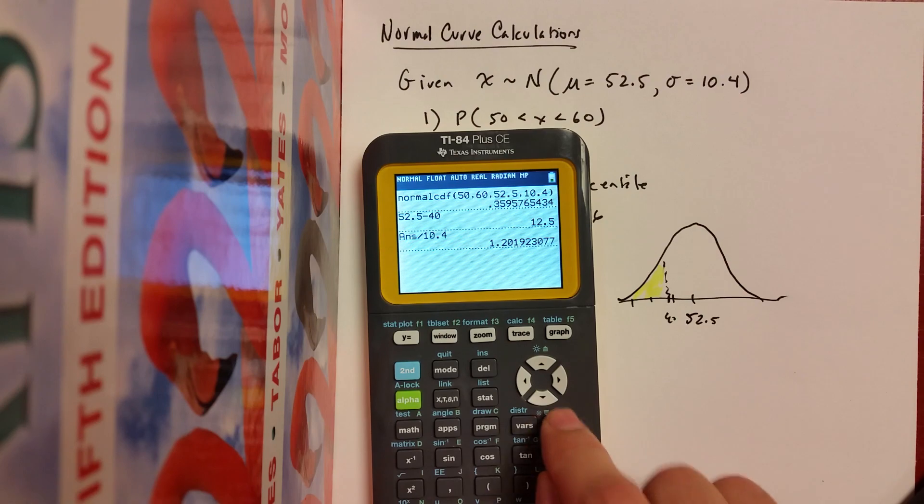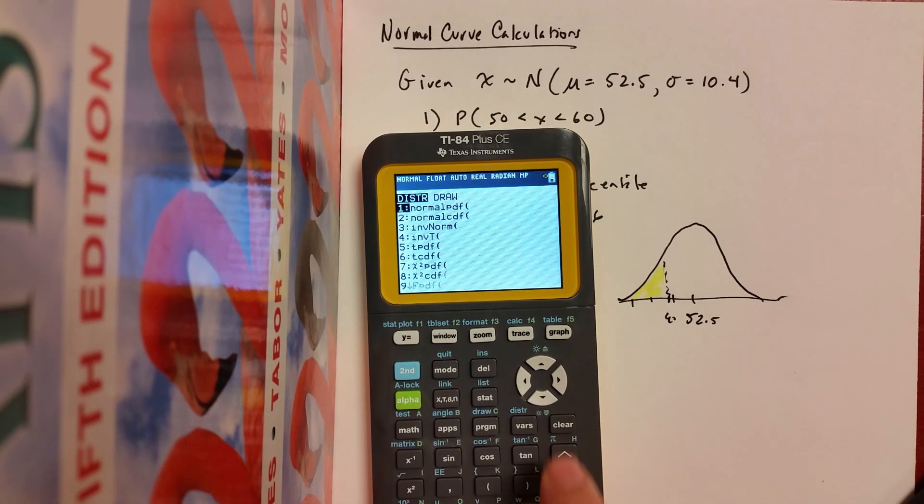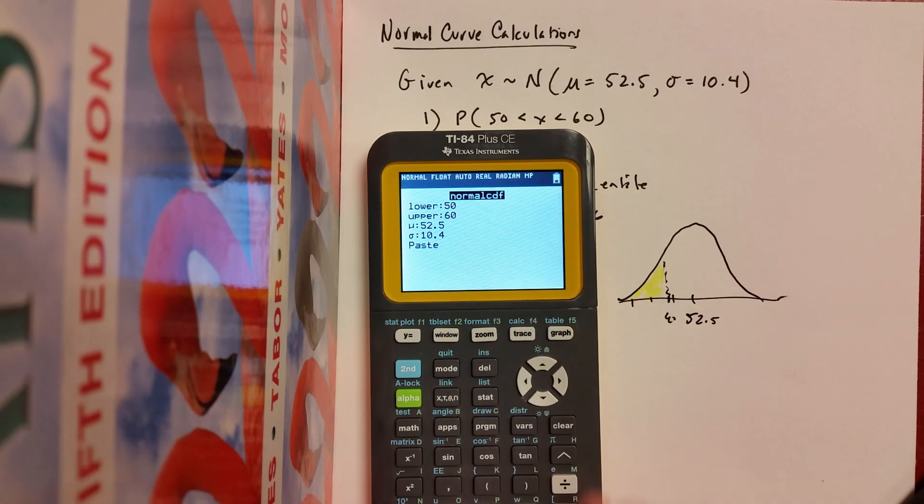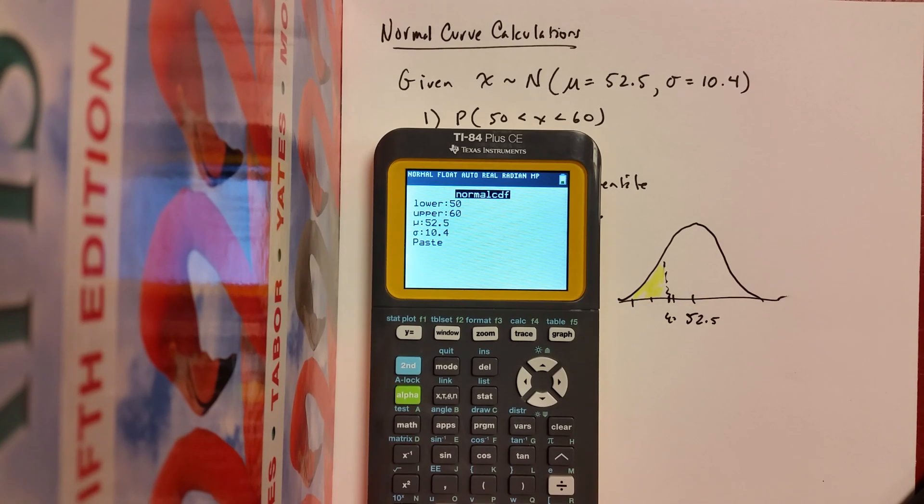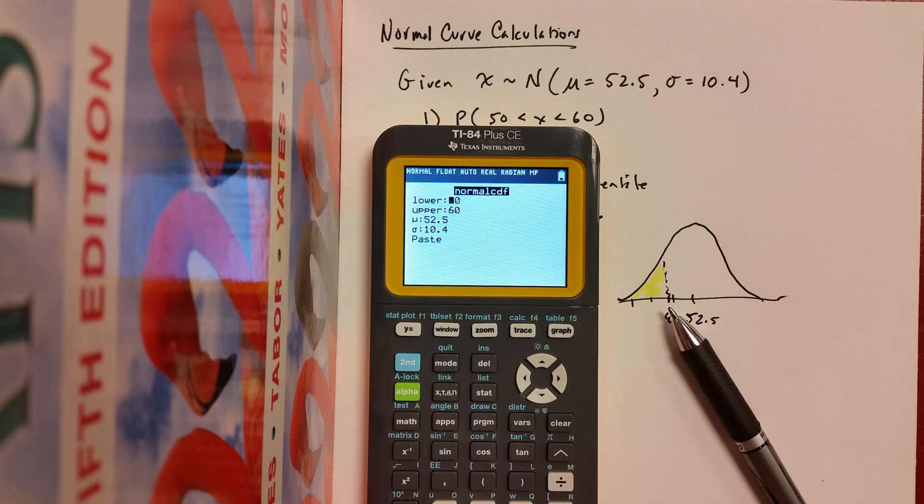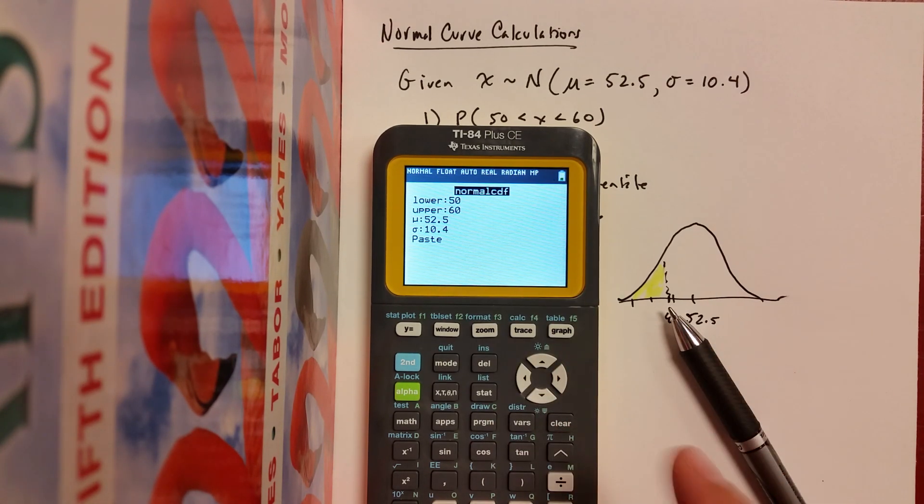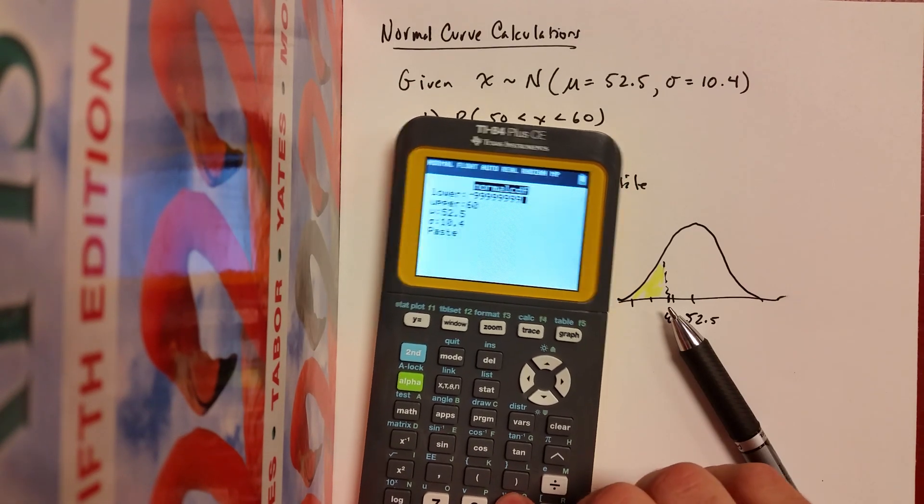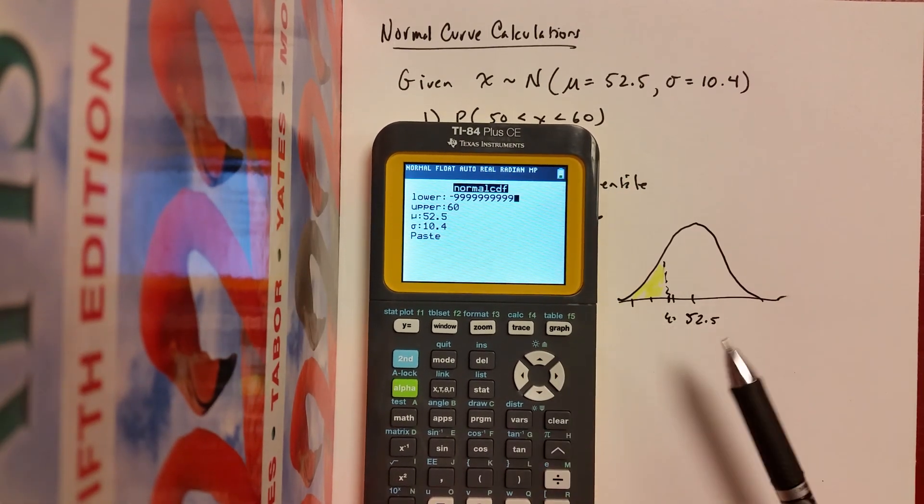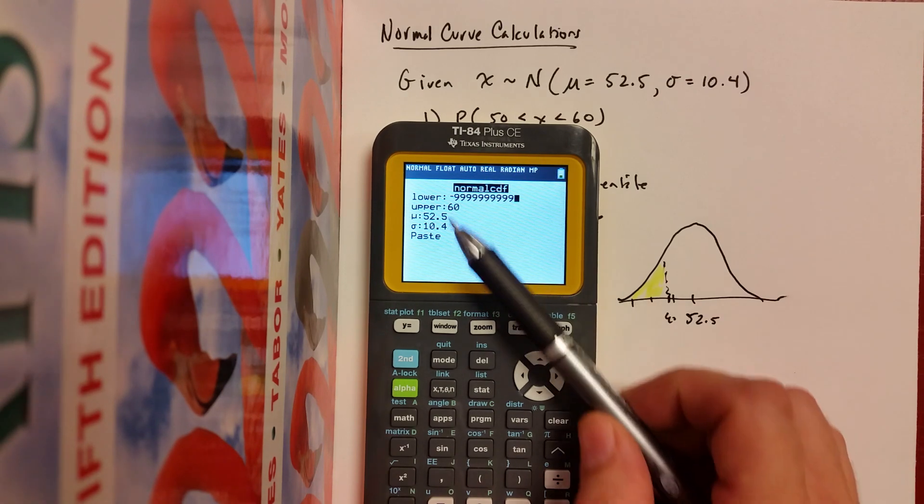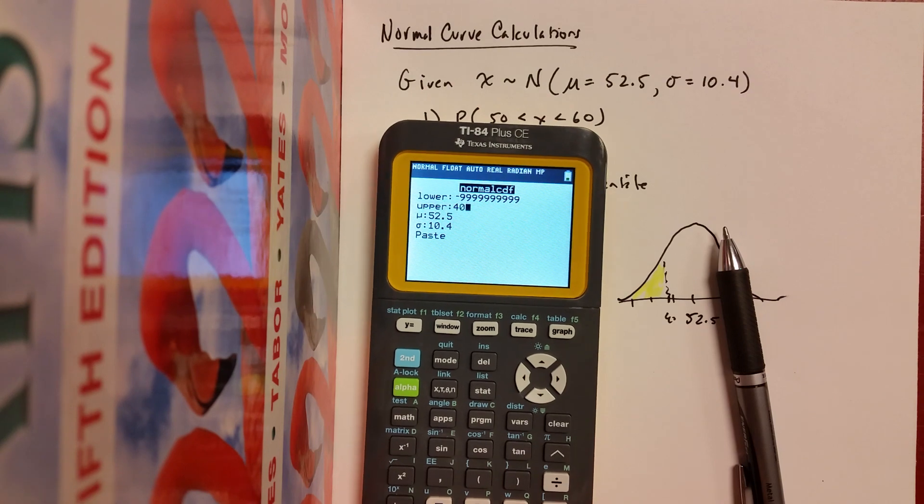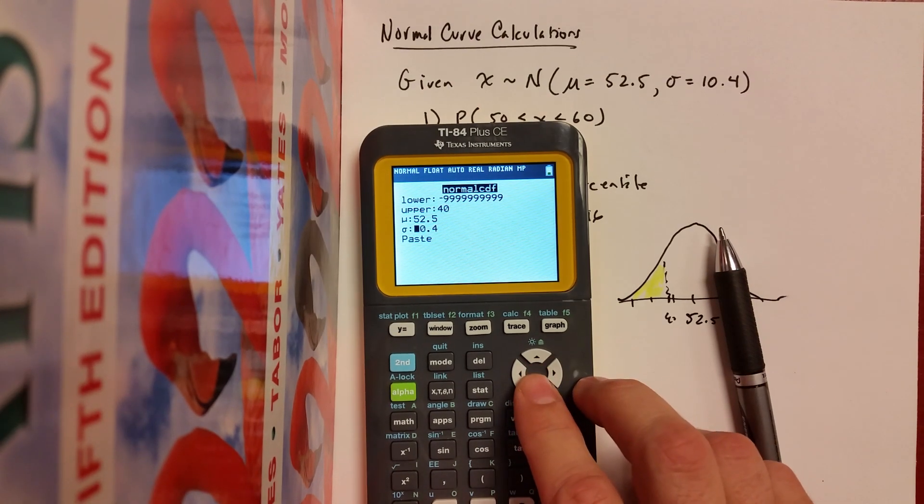So I'm going to hit, again, I'll clear this out. I'll hit second vars. I'll go normal CDF enter. And now for my lower boundary, I need my calculator to go infinitely far to the left. And by default, sometimes the calculator has this little negative one E 99 business. Really you just need an extremely small number, something that's way, way, way to the left of this value. And so I just like to hit negative with a bunch of nines. You don't need to go insane, but that works. So I'll put a 40 there for the upper boundary, same mean and standard deviation.